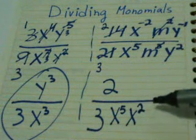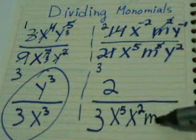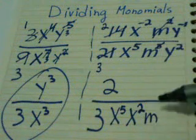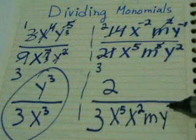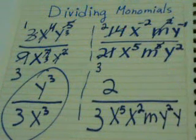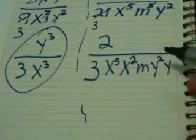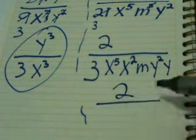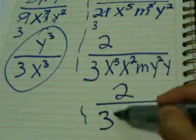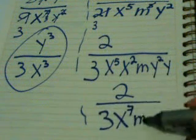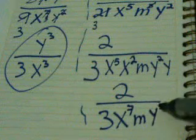Then I will have only m, because we cancel m^2 with m^3, it's m down. And y^2 times y. And the final answer would be 2 over 3x^7my^3.